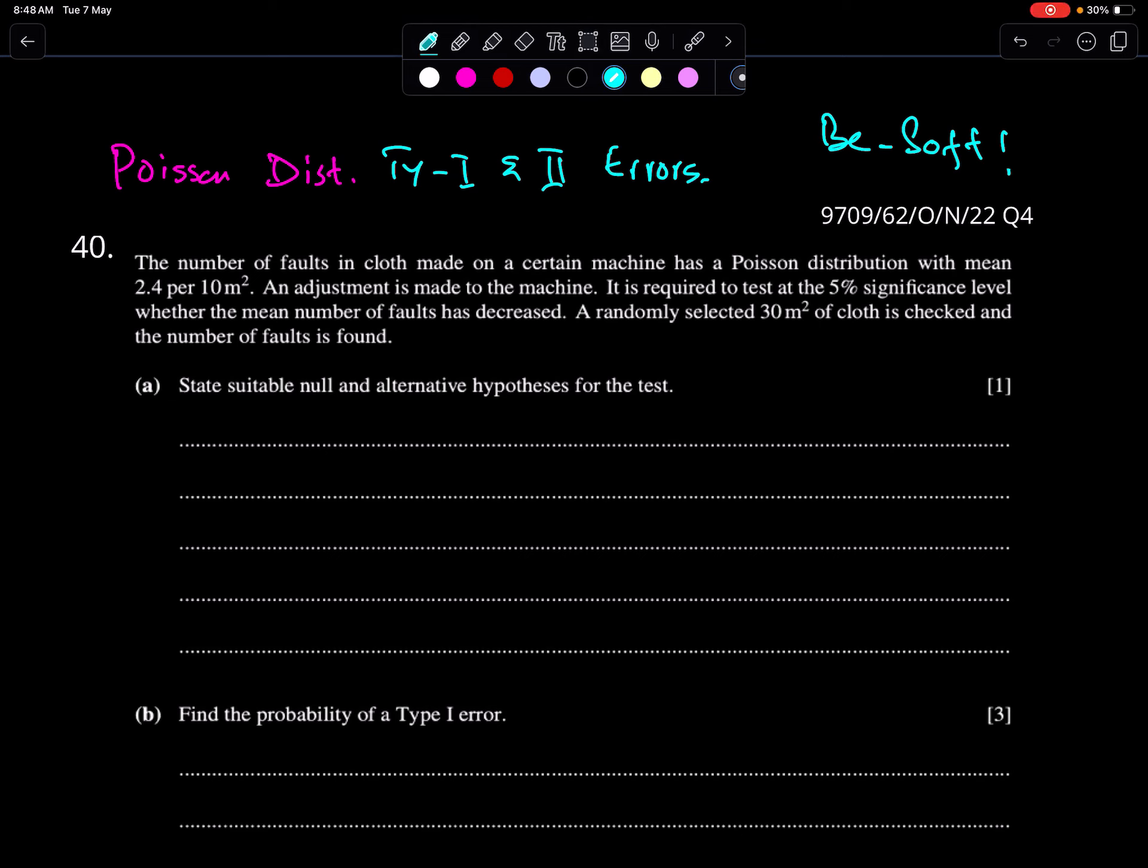Bismillah al-Rahman al-Rahim. This is an example question of type 1 and type 2 errors of Poisson distribution. An important advice: we should be soft to everyone. This question is from November 22, paper 6, question 4.